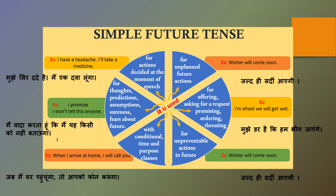Simple future tense is also used with conditional time and purpose clauses. For example, 'When I arrive at home, I will call you.' The call is confirmed, but the time depends on the condition — when you get home. So it shows a purpose with a condition attached.